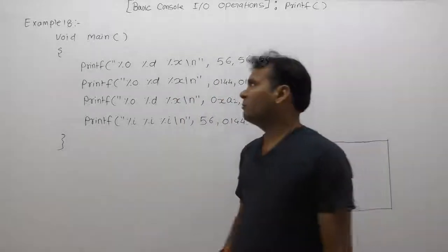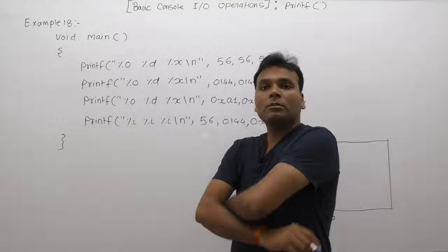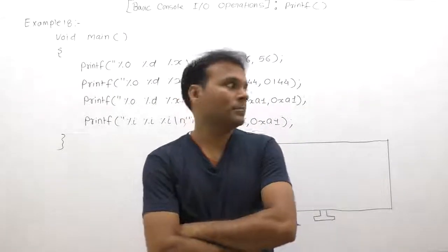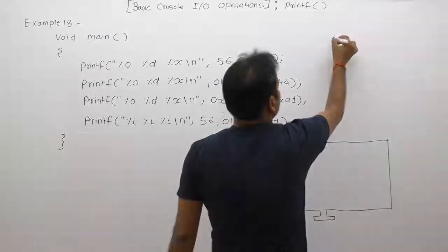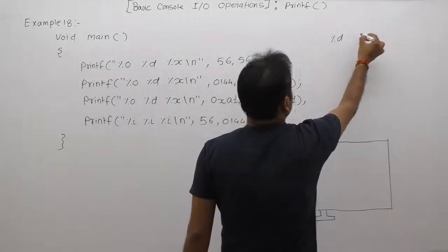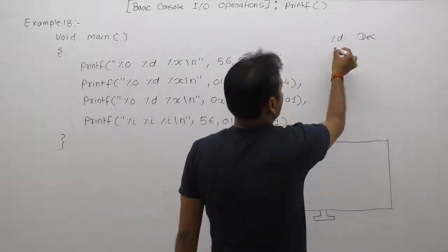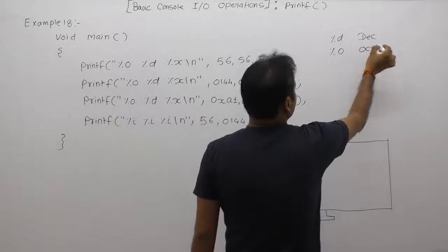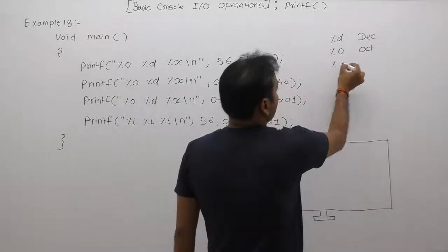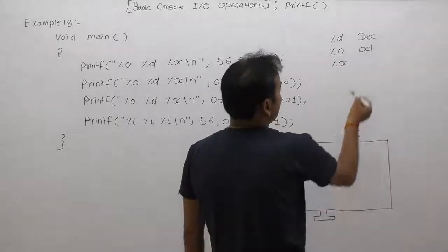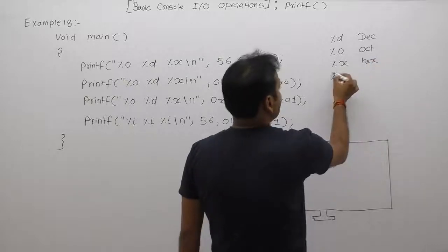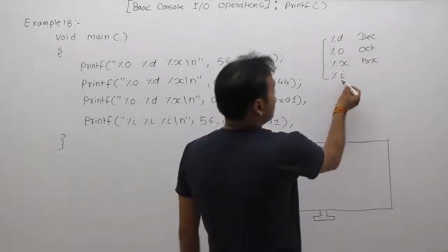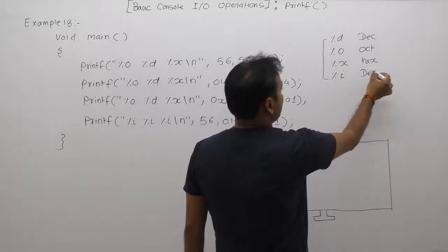Now let's see the next example about printf functions with respect to different types of format specifiers — decimal number system, octal number system, and hexadecimal number system. Using %d we can display any integer in decimal, using %o we can display any integer in octal, using %x we can display any integer in hexadecimal, and %i is almost the same as %d.